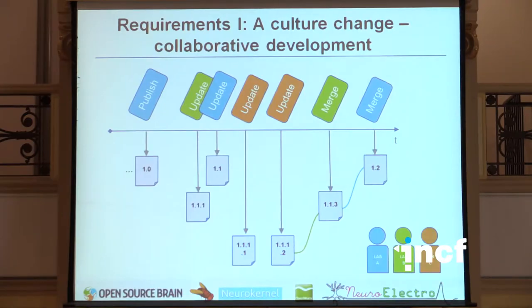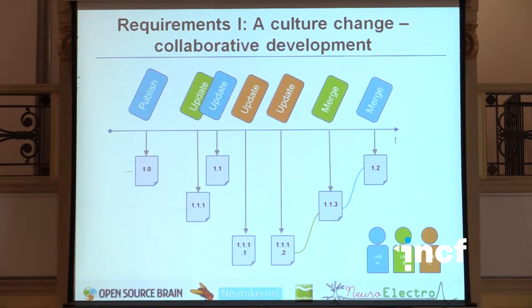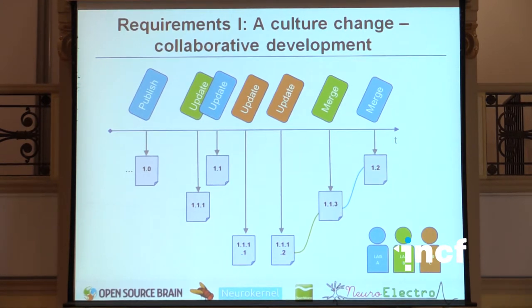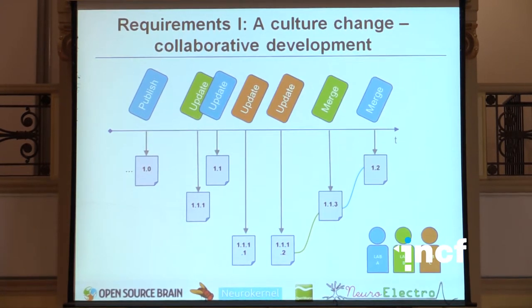The idea is to collaborate together to build models and use open-source type approaches. This represents a cultural change in model building — collaborative development — and that's what we'll be talking about today along with the associated neuroinformatics tools. There are many benefits to getting together to build these complex models: not only continuity and building in a modular fashion, but also, as we know from open-source, you in the end get a much more robust product, and potentially by having more people looking at a model, it's going to do its job much better.